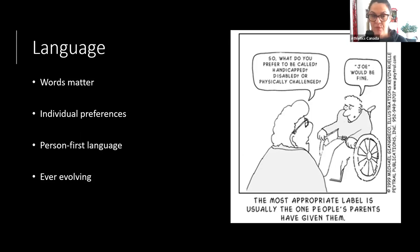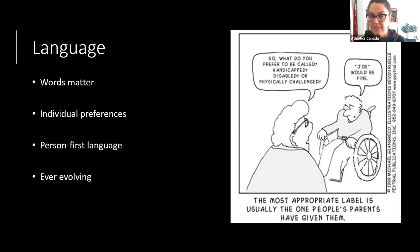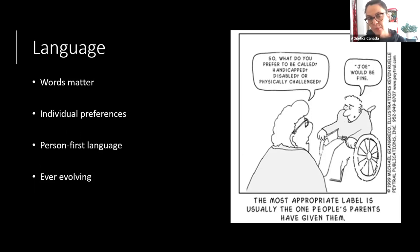I suggest starting with person-first language versus identity-first language. Person-first would be 'athlete with a disability,' 'person with a disability,' or 'person with a vision impairment.' Whereas someone might identify identity-first, saying 'I'm disabled,' 'I am a disabled athlete,' 'I am an autistic person,' or 'I am a blind athlete.' Those are individual preferences, and it's ever evolving, but my suggestion is to start with person-first language — putting the person before the descriptor.